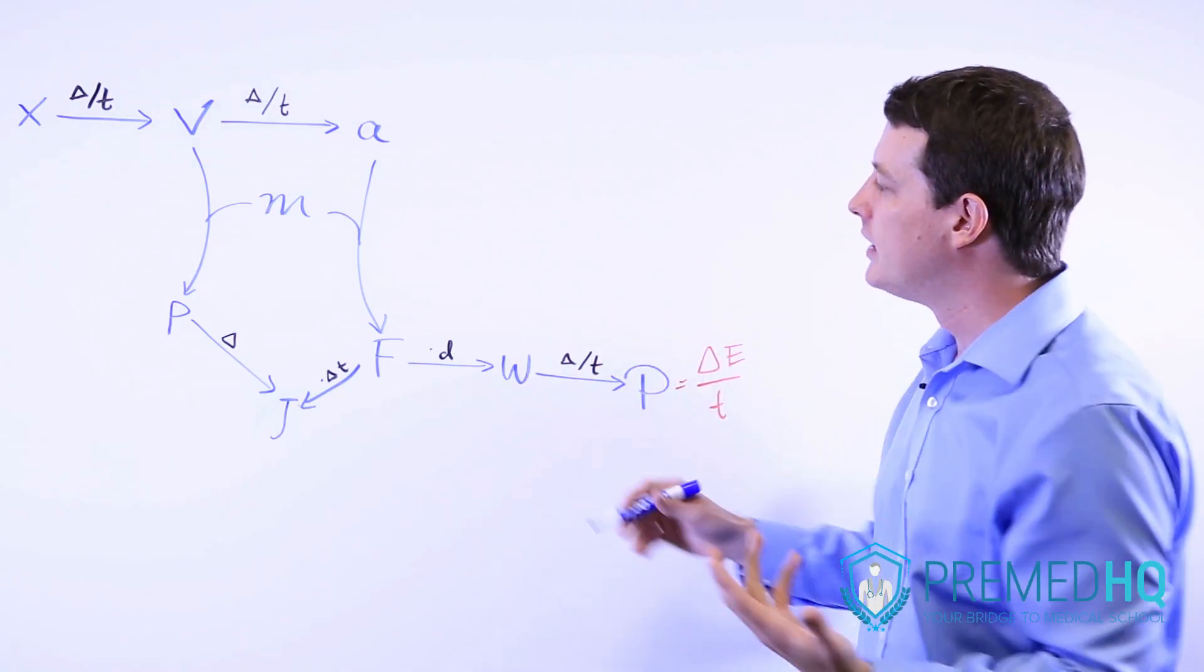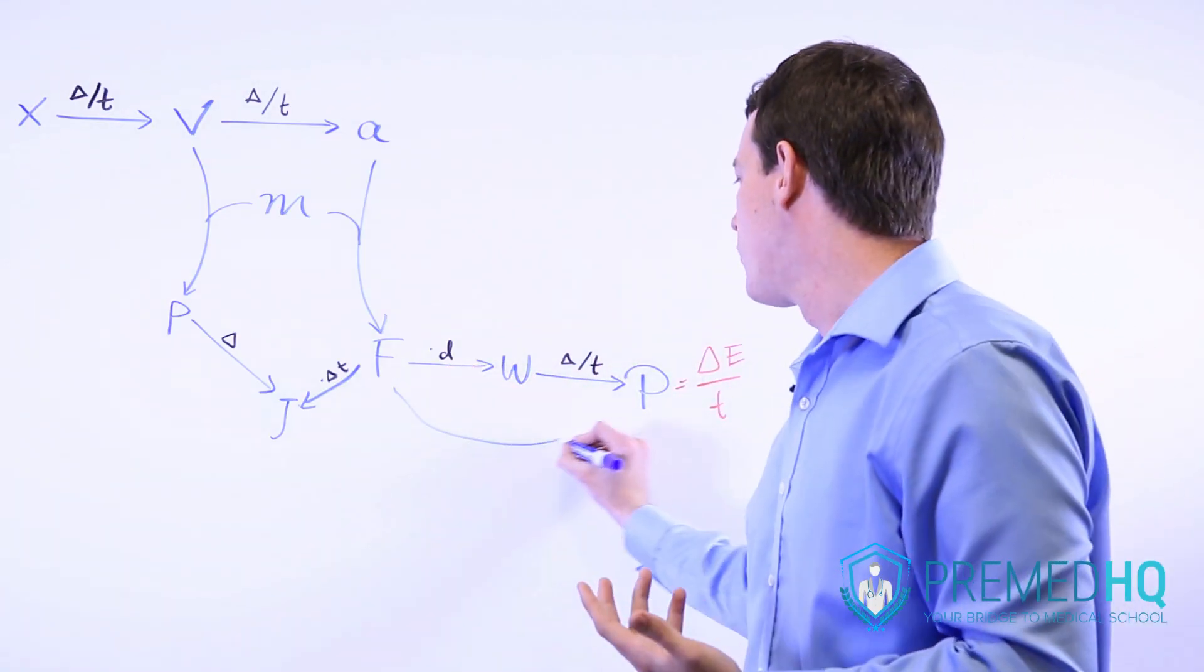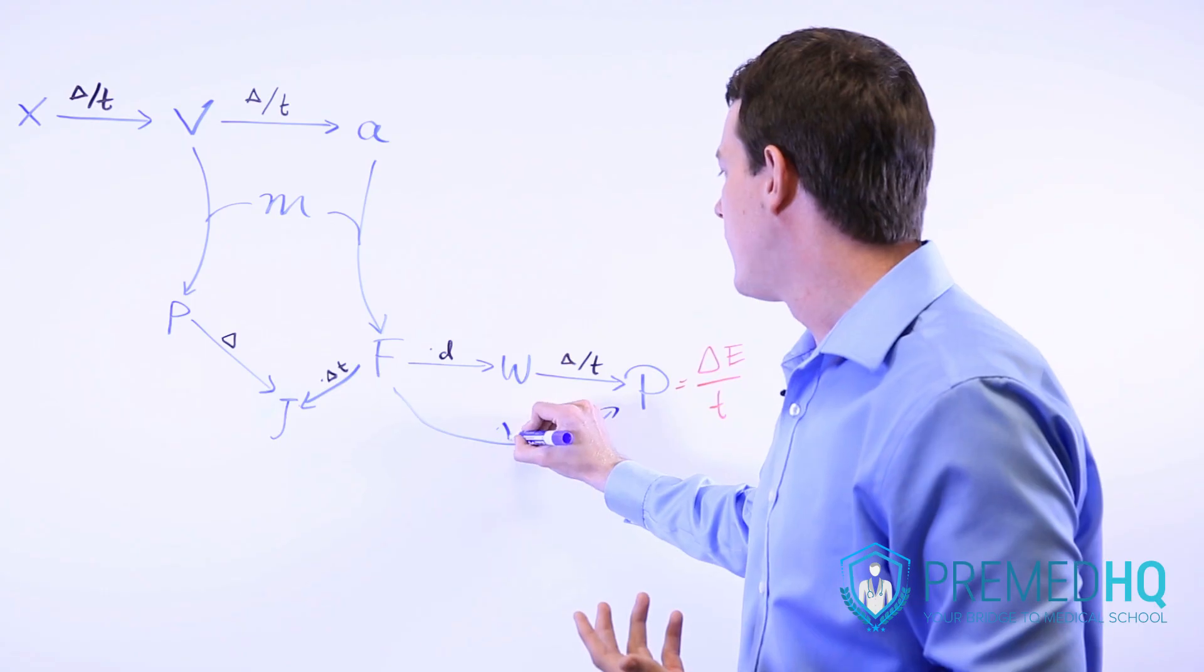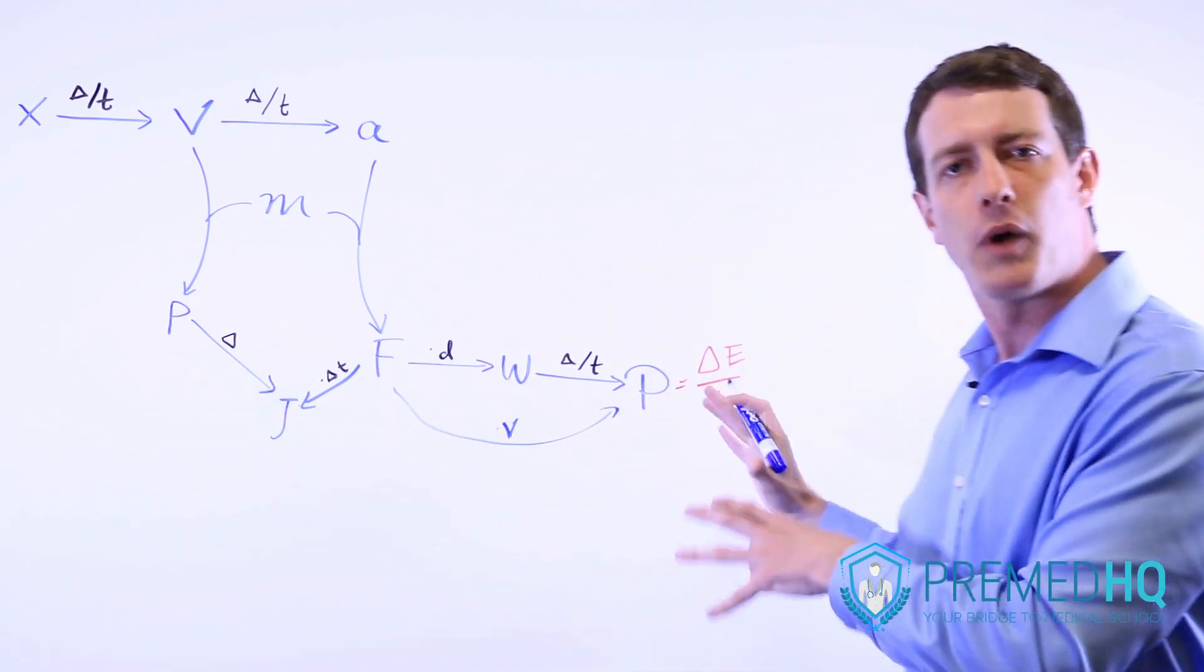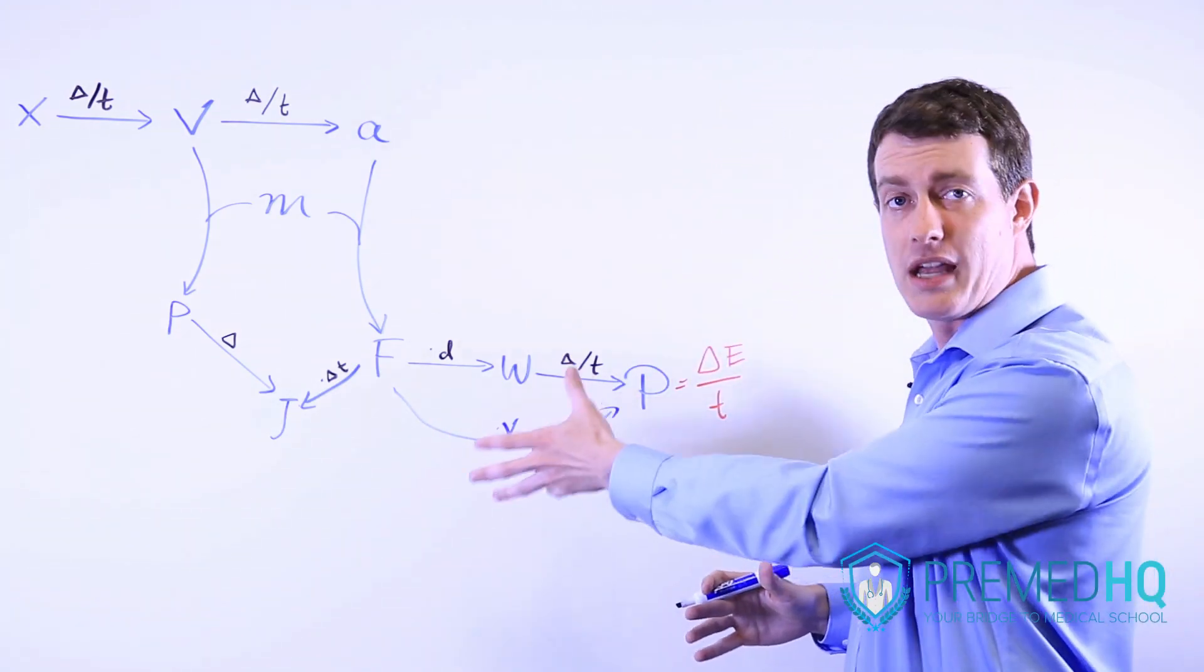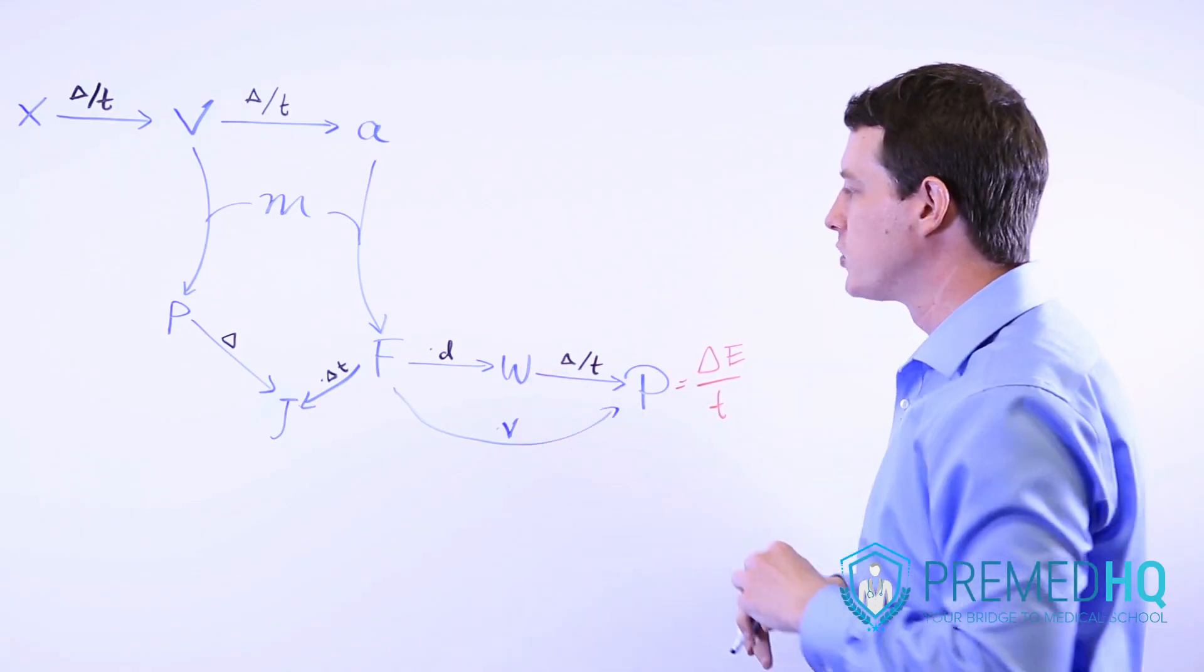And if you have distance over time, that is velocity. And so force times velocity can give you another way of getting to power. That's a formula you may encounter. Power equals force times velocity.